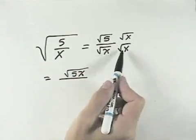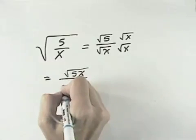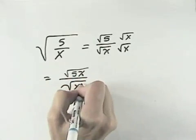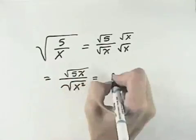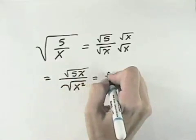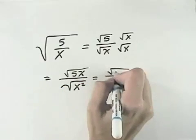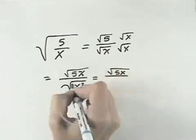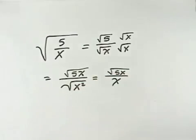But in the denominator, a square root times itself is going to be just x. Or, as a middle step, we can look at it as the square root of x squared. But because the square root and the square power have an opposite relationship, you can cancel the square root with the square power to just be left with x.